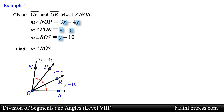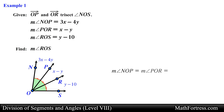Now we need to figure out a way to find the value of x and y in order to determine the measurement of angle ROS. We know that the three smaller angles are congruent to each other. This means that we can set up the following geometric relation: the measurement of angle NOP is equal to the measurement of angle POR, which is also equal to the measurement of angle ROS.